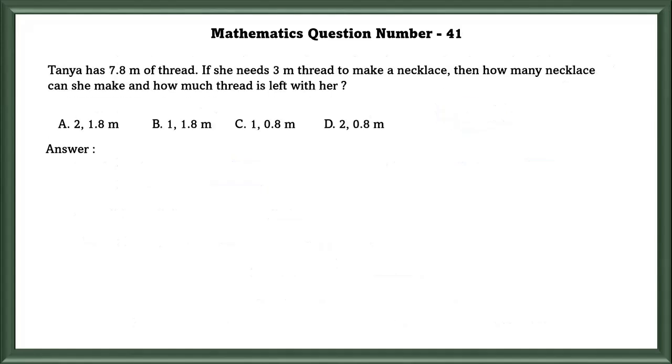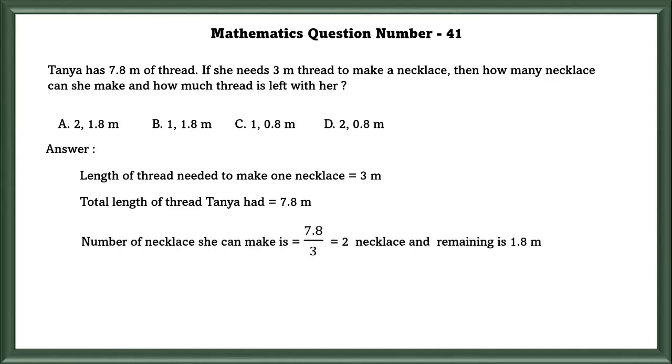Mathematics question number 41. Tanya has 7.8 meters of thread. If she needs 3 meters of thread to make a necklace, then how many necklaces can she make and how much thread is left with her? Length of thread needed to make one necklace equals 3 meters. So in order to find how many necklaces she can make, we have to divide it: 7.8 divided by 3, which equals 2 necklaces and remaining is 1.8 meters.